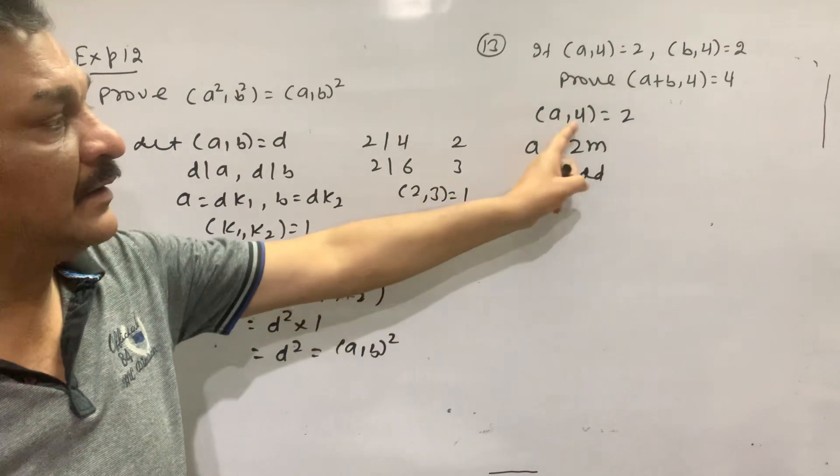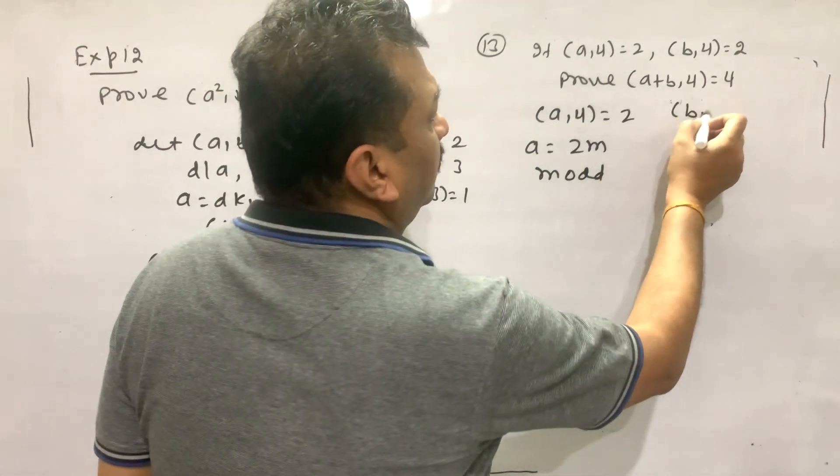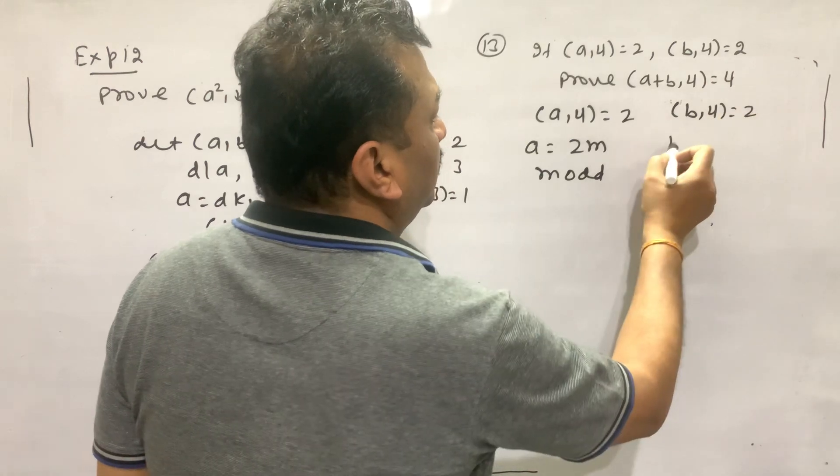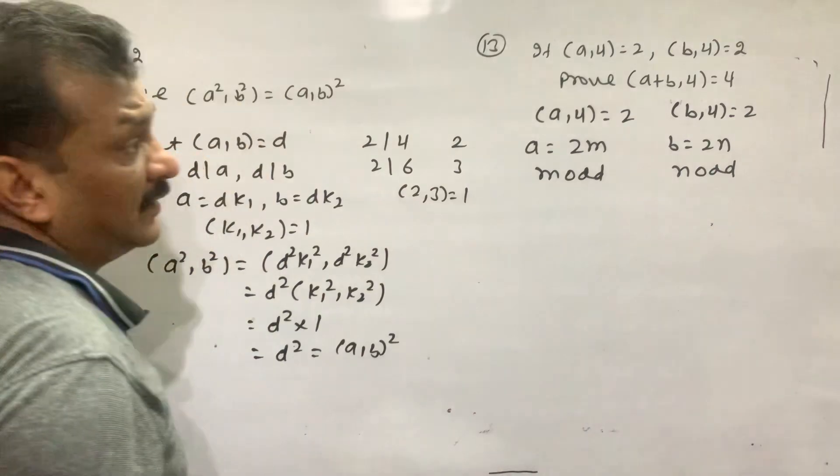So this will be 2. If I keep B as 4, the greatest common divisor is 2. So B, what do I need to do? N is what, is 4. Clear?